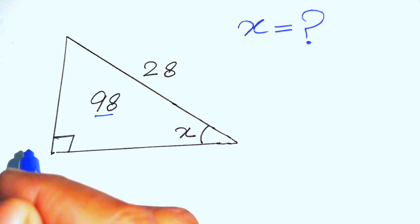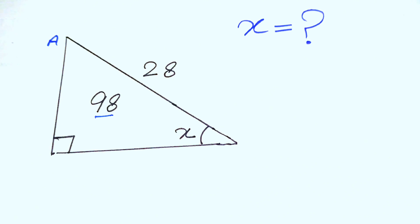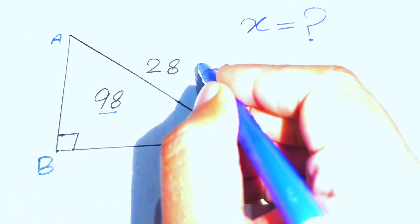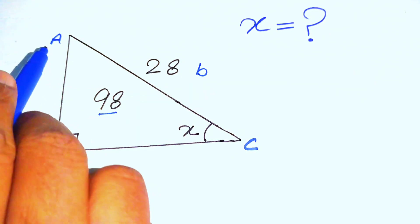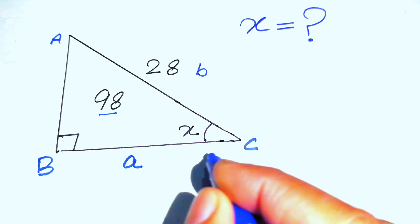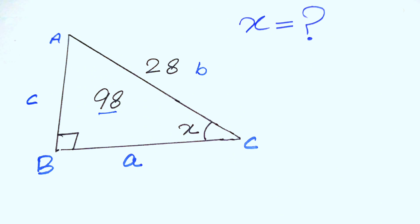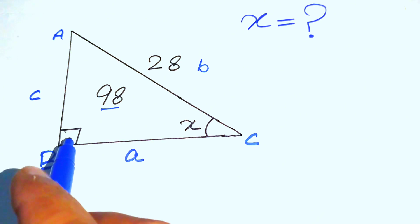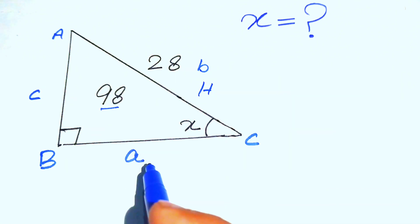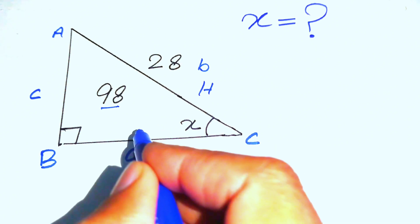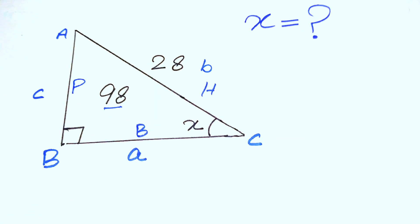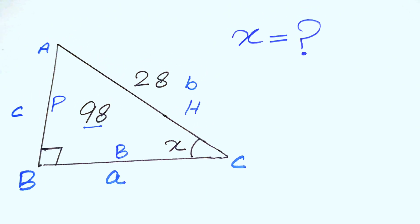First, we label the triangle: this corner is capital A, this one is B, and this one is C. The side opposite to vertex B is denoted by small b, the side opposite to vertex A is small a, and this side is small c. In a right triangle, the side opposite the right angle is the hypotenuse, the side joining the two acute angles is the base, and the remaining side is the perpendicular.